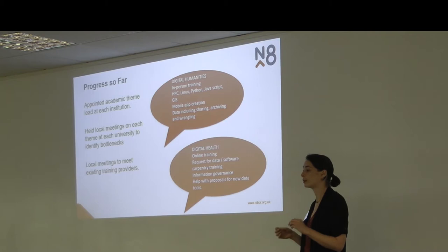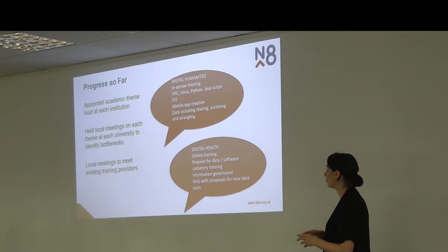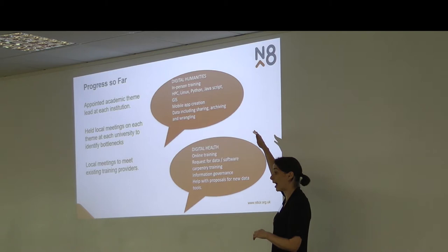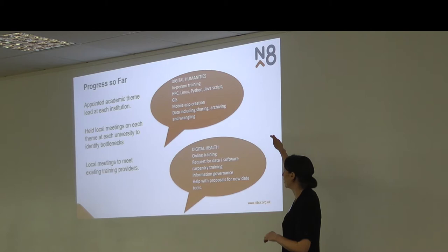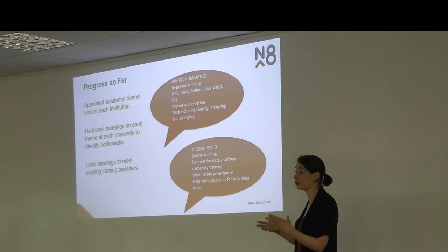Both communities said they wanted training specific to their discipline — not, for example, a generic Python course, but Python for digital humanities using digital humanities examples. The health community similarly wanted health data in their training. Humanities people generally preferred one-to-one training or workshop formats. Common training topics included HPC, Linux, JavaScript, Python, and GIS. One thing that came up a lot was mobile app creation, which humanities researchers use frequently, and which could be an example of generic software developed for multiple purposes.